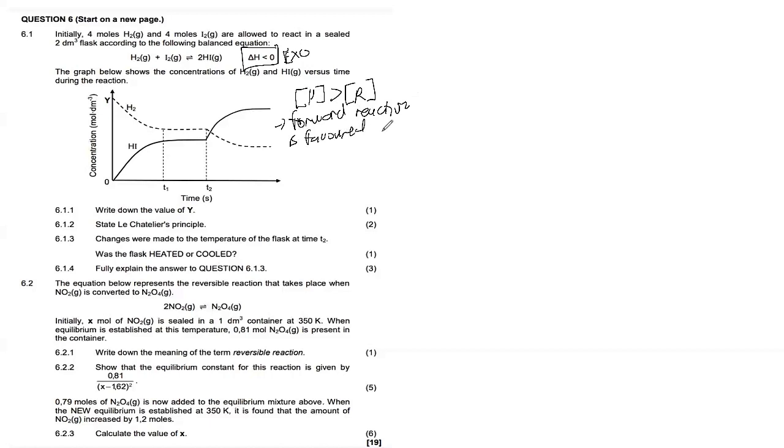At time t2, there is an increase in the concentration of the product HI and a corresponding change in H₂. When the concentration of the product becomes greater than that of the reactant, this tells us the forward reaction is favoured. Since our forward reaction is exothermic, and the exothermic reaction is favoured by a decrease in temperature, the answer for 6.1.3 is that the flask was cooled.